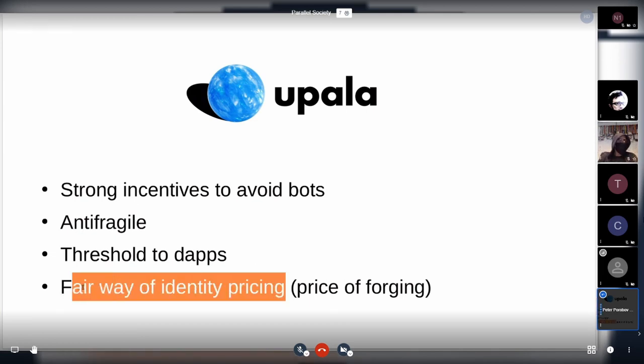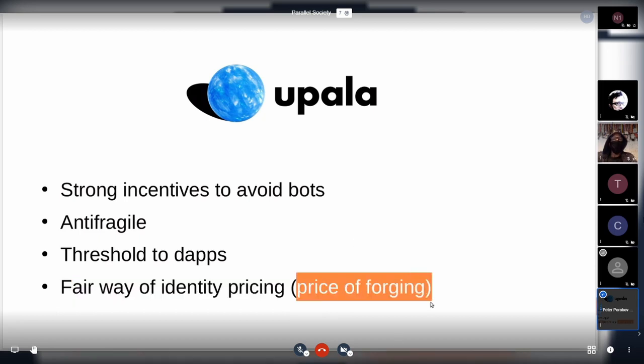But we don't know this price. As for state ID, we know there are black markets but we don't know exactly how much it costs to buy a certain state ID. Upala provides exactly this price - the price of forging - because if someone explodes, it will at least cost this person at least the same amount of money to enter the system again.